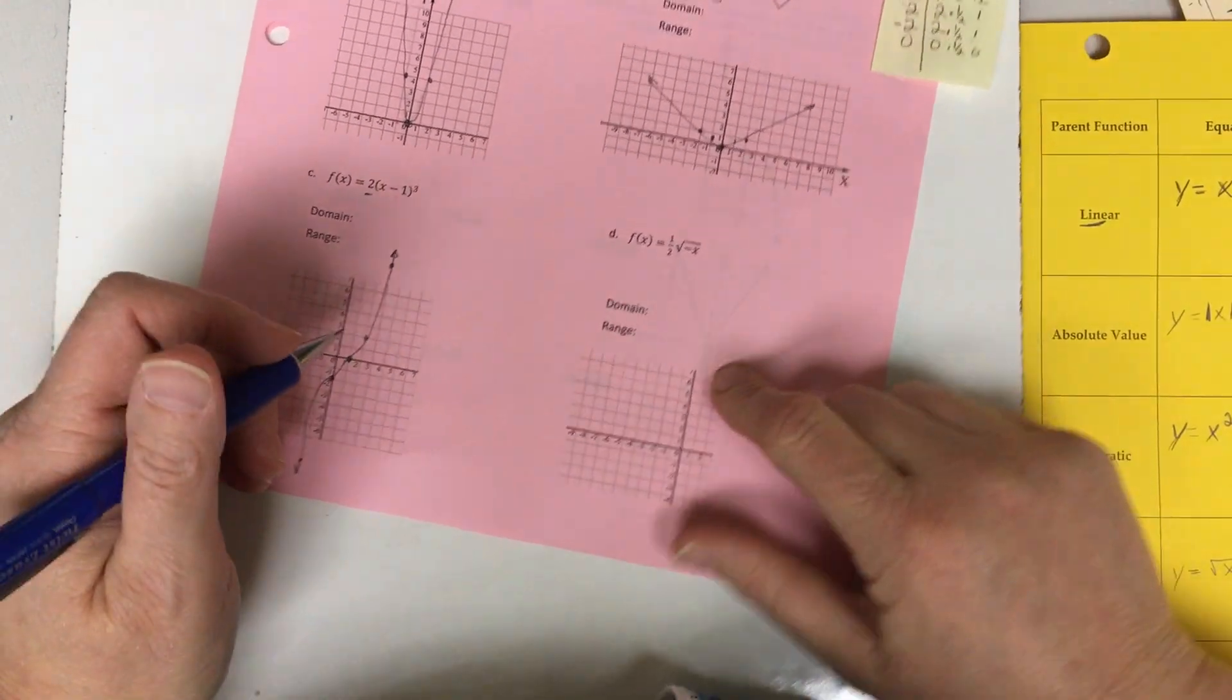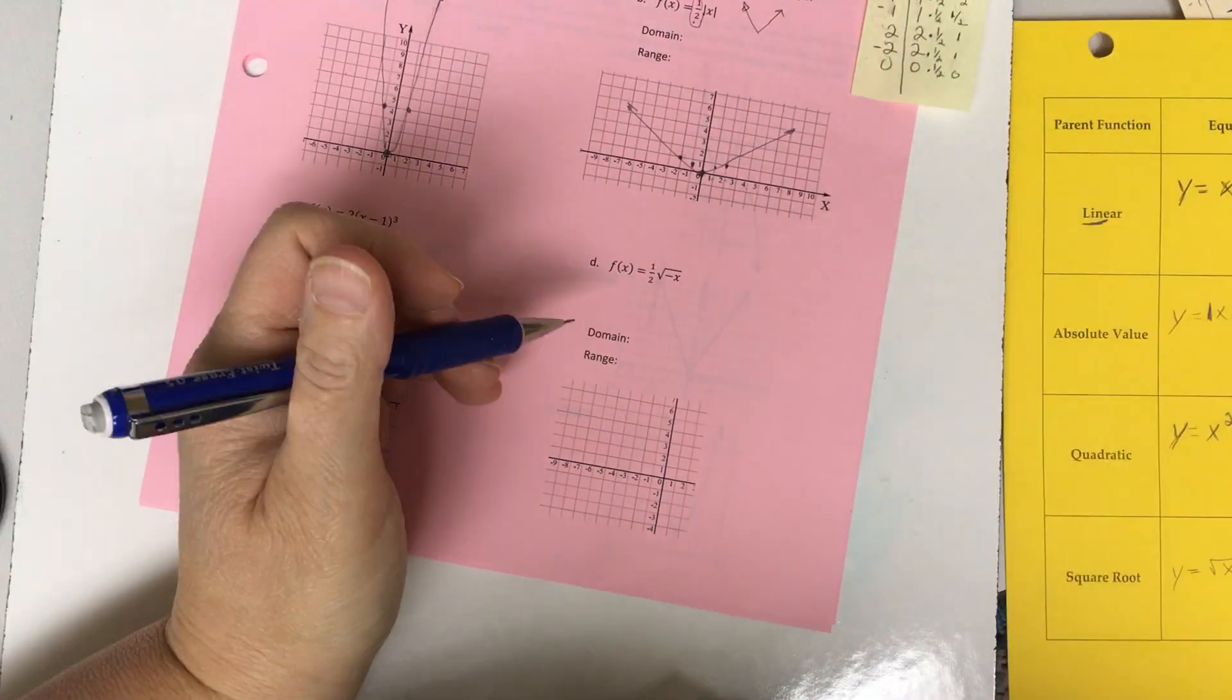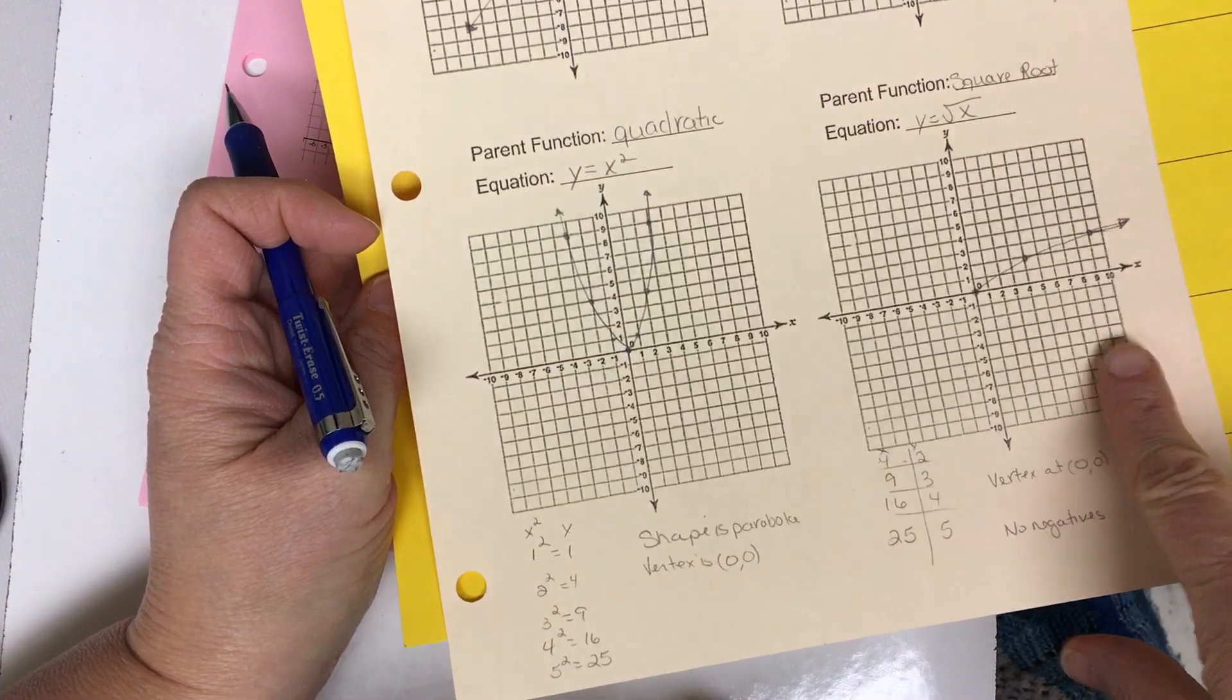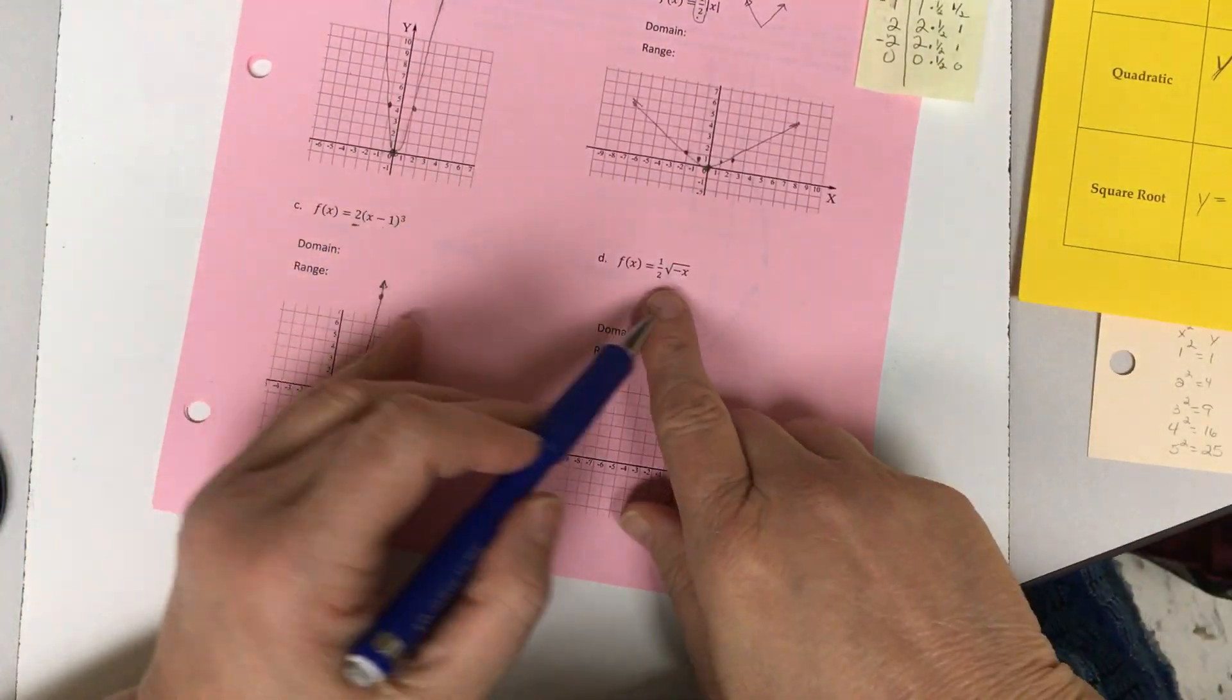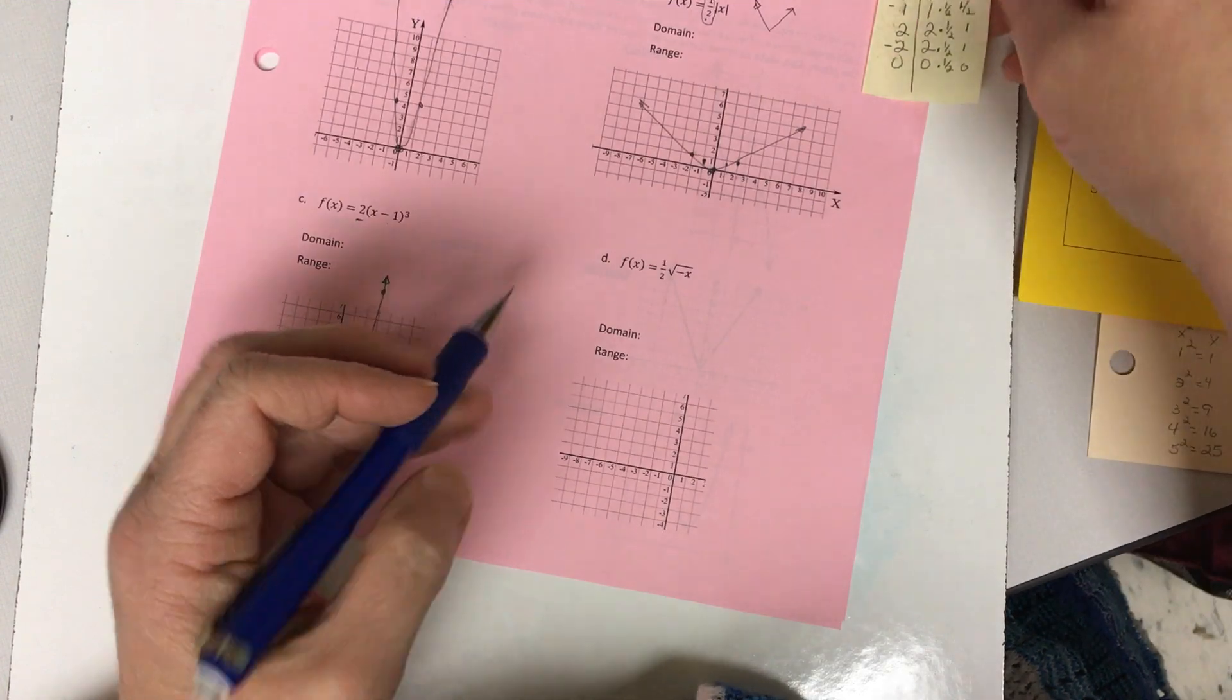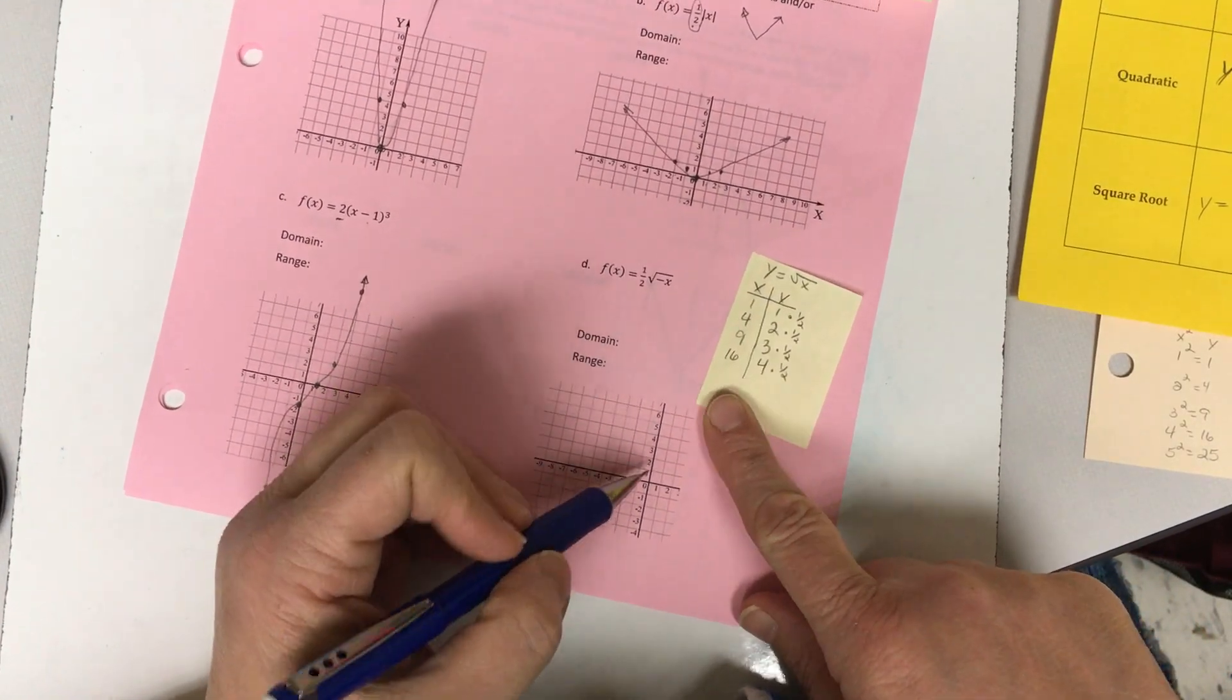All right. Let's take a look at this one. This one is a square root function. So if you're not sure what your functions look like consult your parent function sheets. We have a couple of them to look for. Square root. All right. Now this one has a flip in it automatically. So I know that whatever I'm doing is going to happen in the opposite direction of what it normally does.